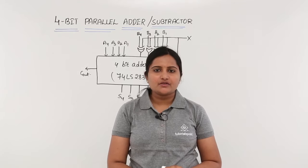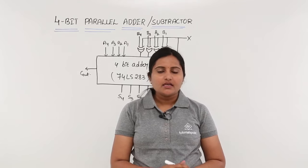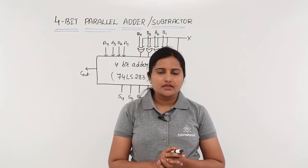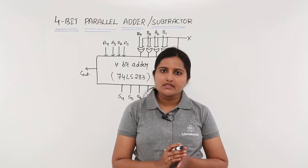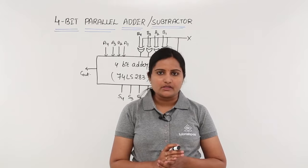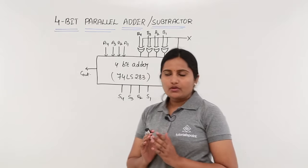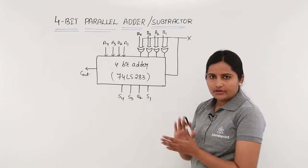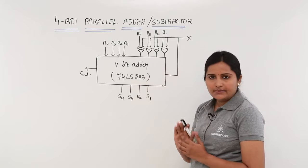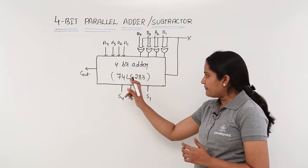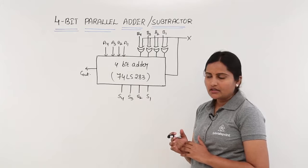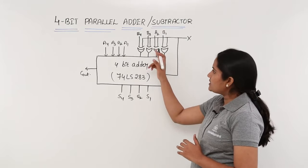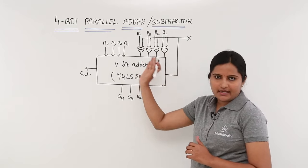In this class we are going to discuss about a 4-bit adder-subtractor. This is an adder-cum-subtractor circuit. By using this circuit we can add 4-bit numbers and we can subtract 4-bit numbers. This is the circuit with IC 74LS283, which will act as adder-cum-subtractor when connected with 4 XOR gates.